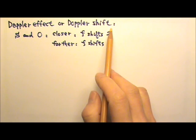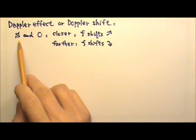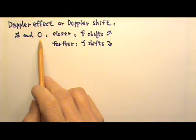Doppler effect or Doppler shift happens when either the wave source is moving or the observer is moving or maybe both are moving.